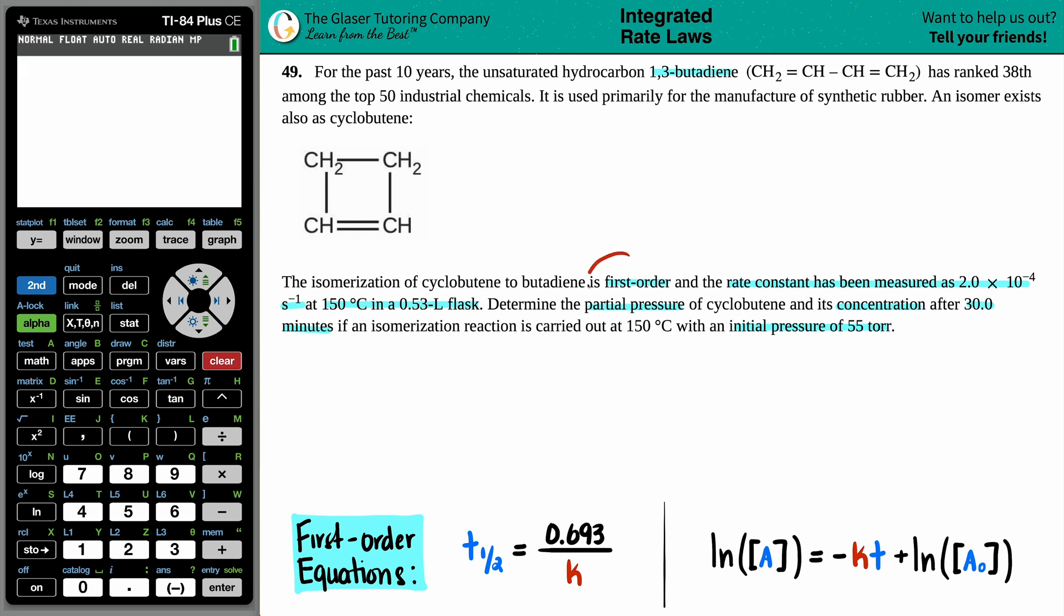But we'll take it one highlight at a time. They did tell us that this was first order reaction, right? And they give us rate constants. We see a lot of numbers here. So if we're dealing with first order chemical kinetics, we have two formulas that we can use. And here are the two first order equations. There's two zero order equations and two second order equations that you may have to memorize for your test or quiz. But here are all the ones that we're allowed to use for this question because they say that it's first order.